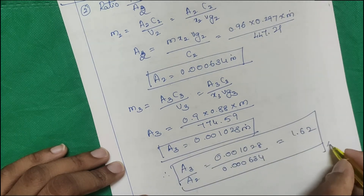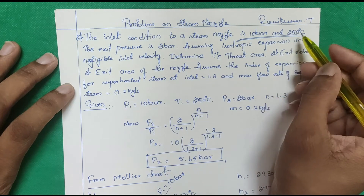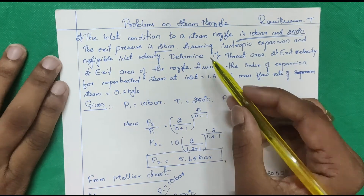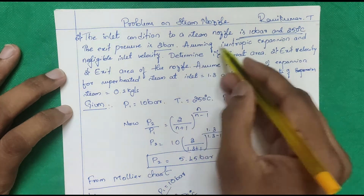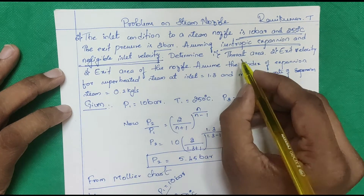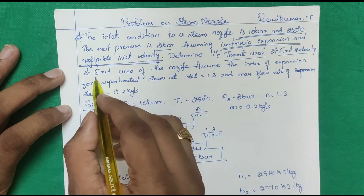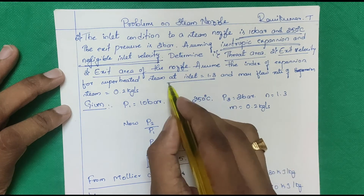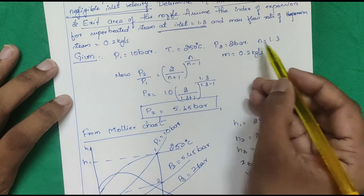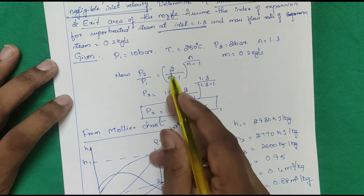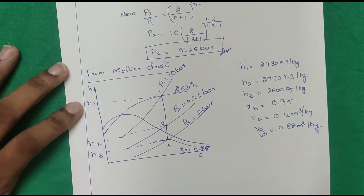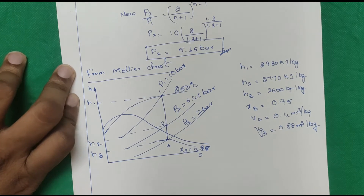Problem 2: If inlet is 100 bar and 250°C (superheated), exit pressure is 2 bar. This is a convergent-divergent nozzle assuming isentropic expansion and negligible inlet velocity. Find throat area, exit velocity, and exit area. With n = 1.3 for adiabatic expansion, find p2 using the same formula as before: given p1, T1, p3, and n, calculate p2. Then plot on the Mollier chart.